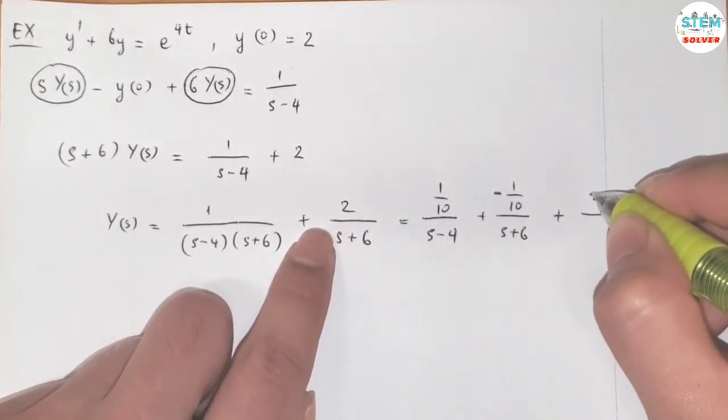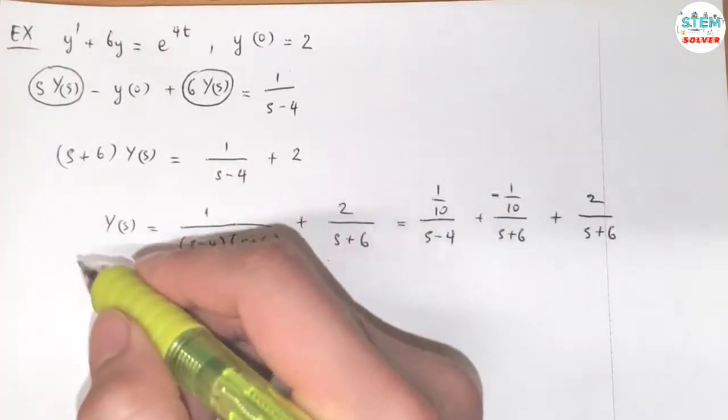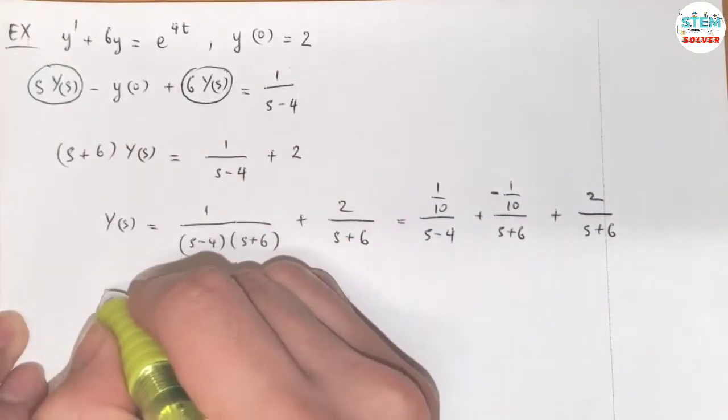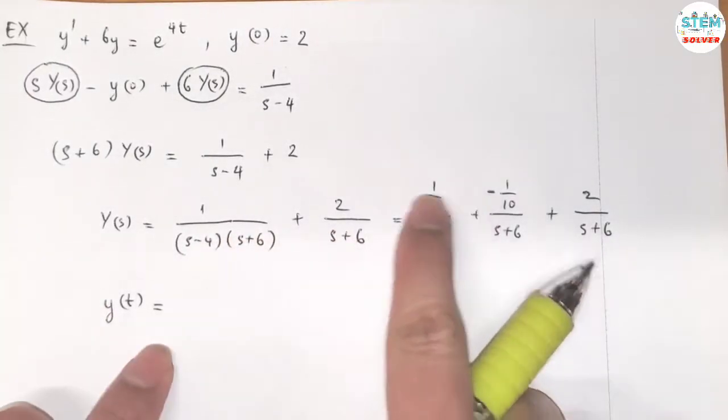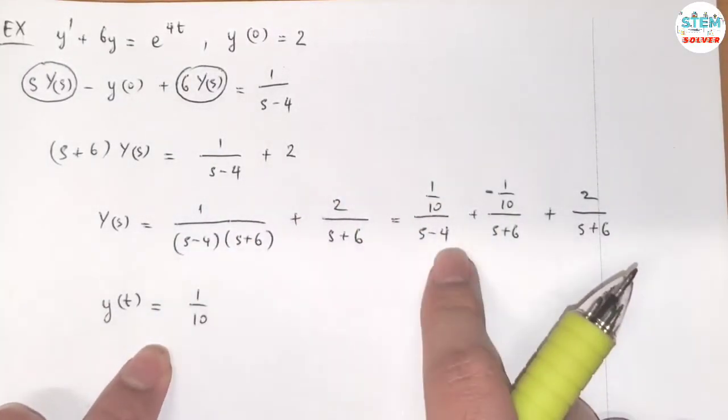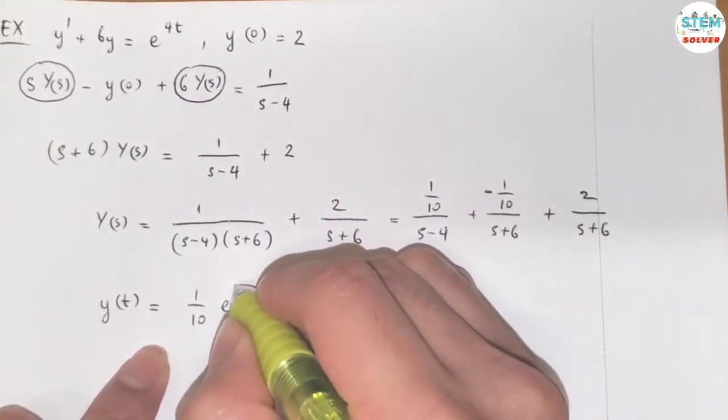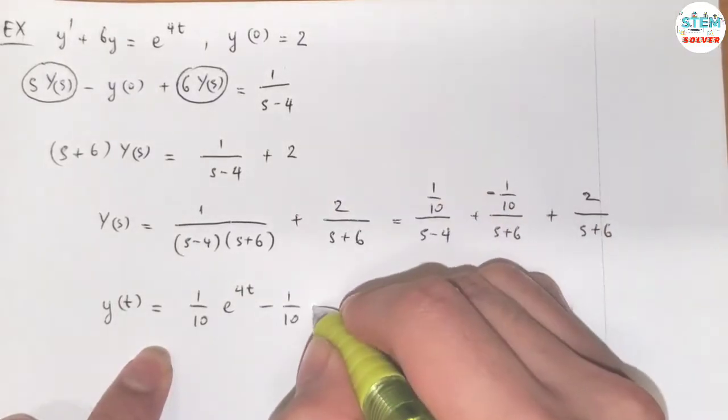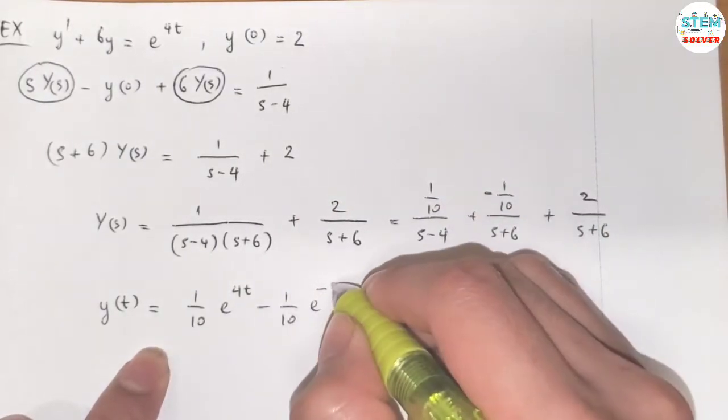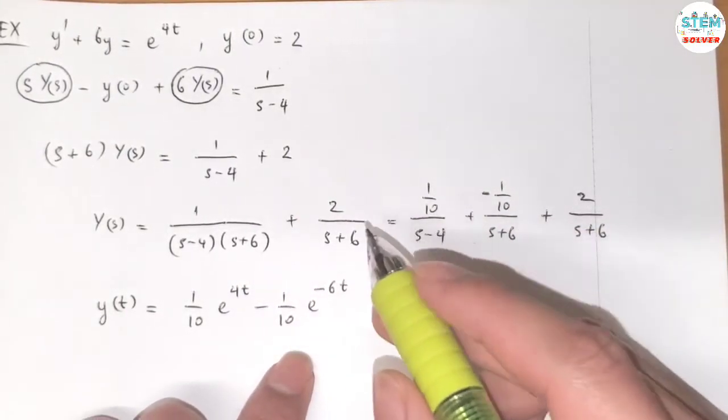Now, I'm going to take the L inverse from both sides. So I have Y of T is equal to factor of 1 tenth. Then L inverse of 1 over S minus 4 is equal to E to the 4T minus factor of negative 1 tenth. L inverse of 1 over S plus 6 is equal to E to the negative 6T.